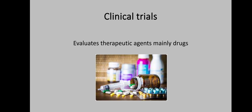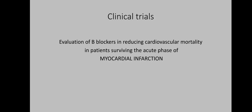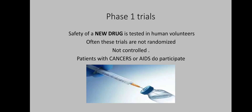Now let us see some types of randomized control trials. One type is clinical trials, which involve evaluation of therapeutic agents, mainly drugs. A famous example is the evaluation of beta blockers in reducing cardiovascular mortality in patients surviving the acute phase of myocardial infarction. Clinical trials testing a new drug involve three phases. Phase one trials involve testing the safety of a new drug on human volunteers; often these trials are not randomized and not controlled, and patients with cancer and AIDS do participate in phase one trials.